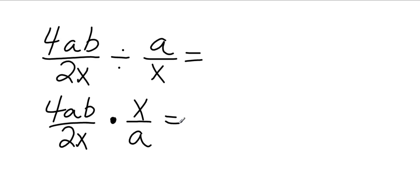Now, just like numbers, variables can cancel as well. If I have an x on the top and an x on the bottom, I can cancel them. If I have an a on the top and an a on the bottom, I can cancel them. So what's left on the top is going to be 4b. And what's left on the bottom is 2.